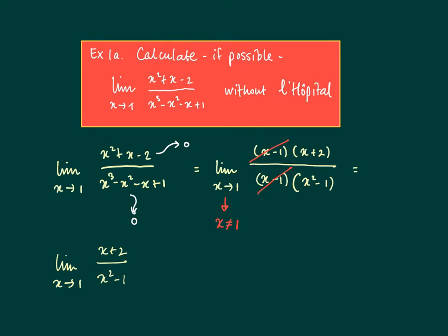We write the limit from x to 1 of x plus 2 divided by x squared minus 1. We see that the numerator goes to 3, and x squared minus 1 goes to 0.